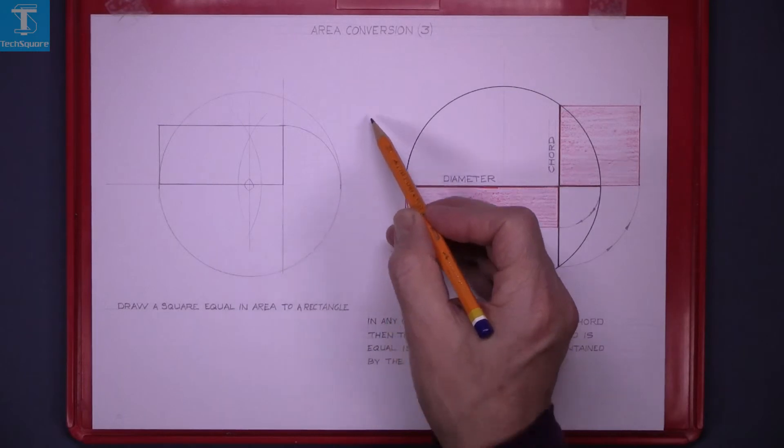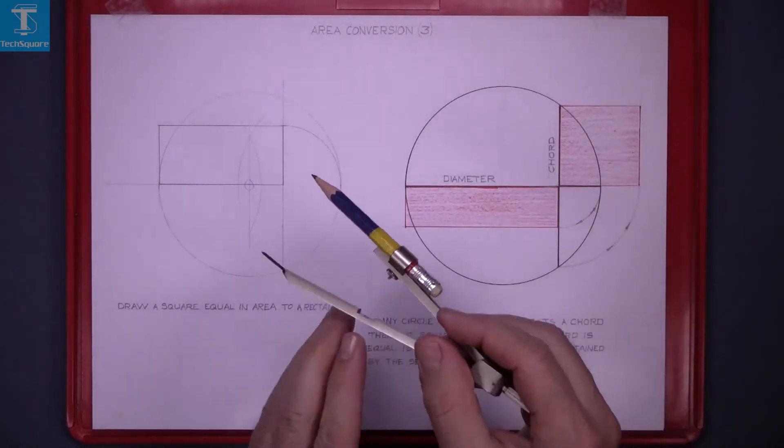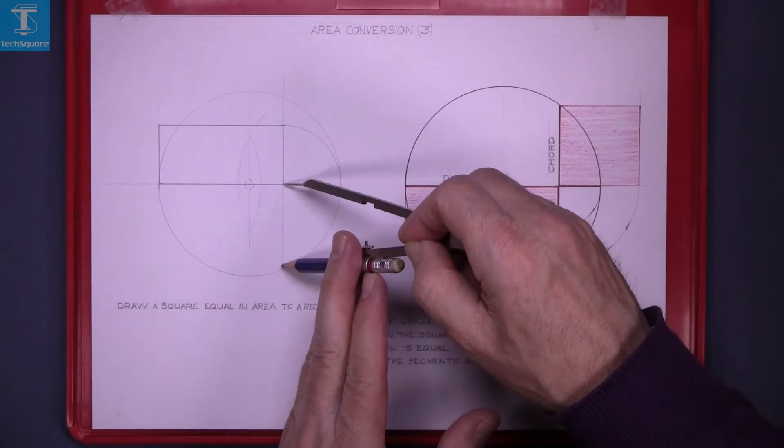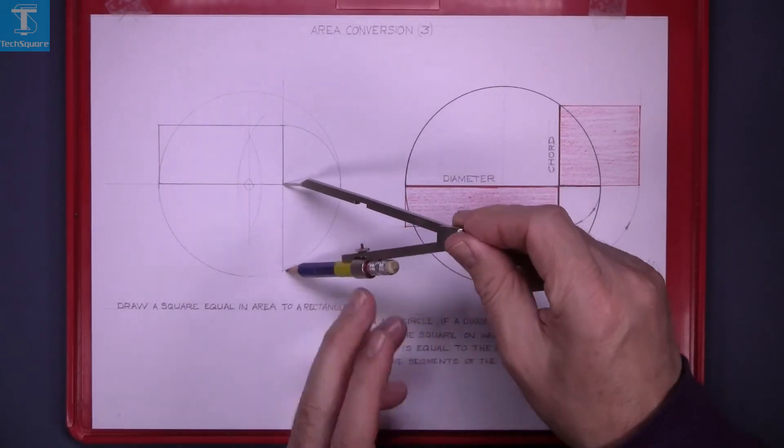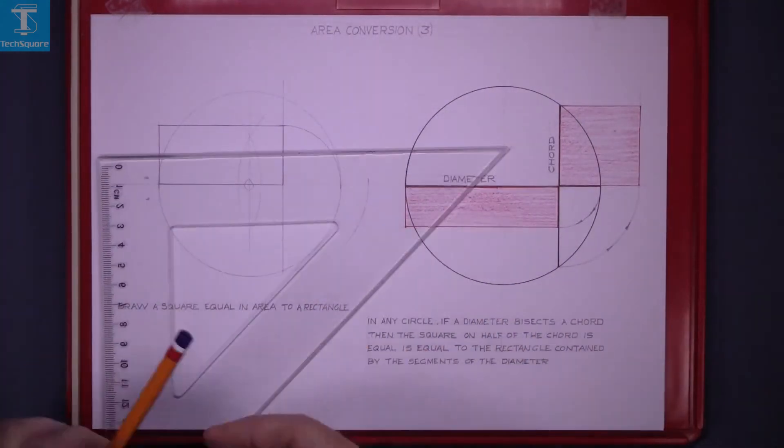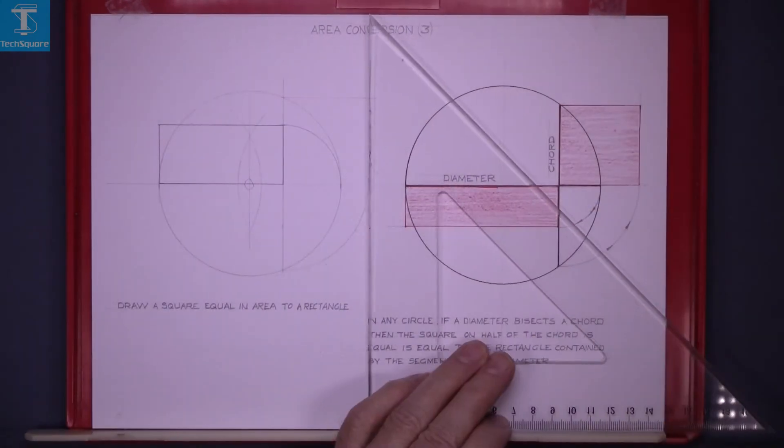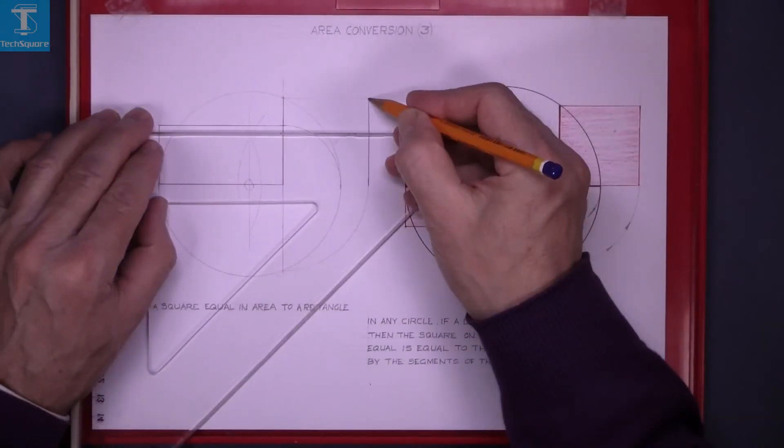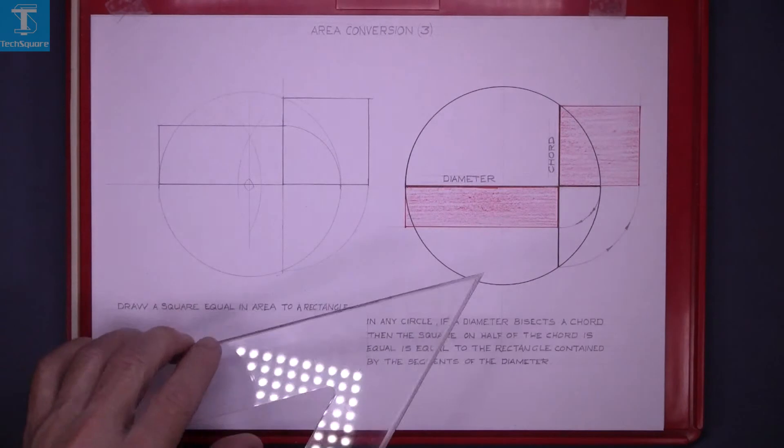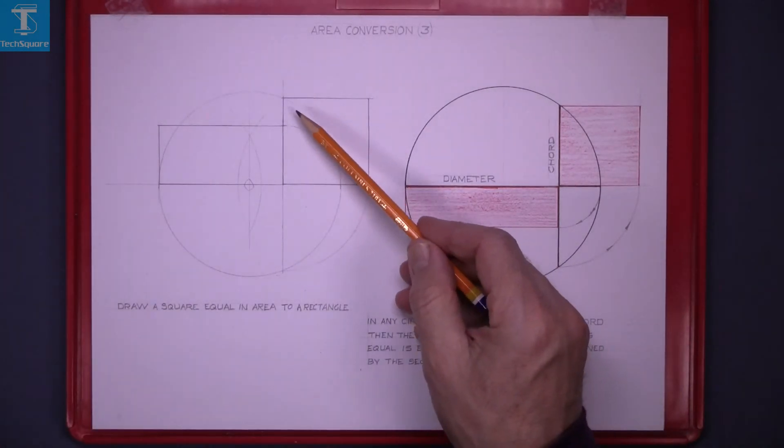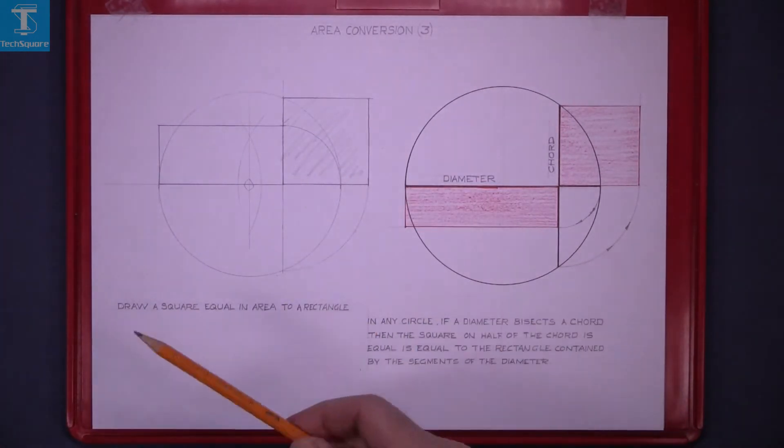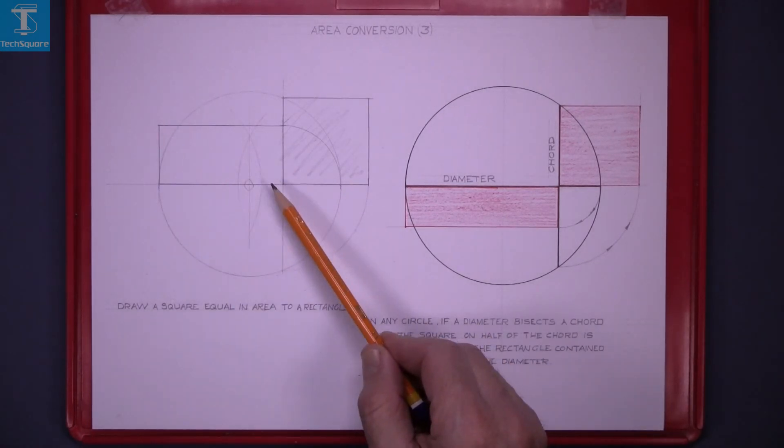Use this point here and create the square. Rotate the half of the chord up. Draw in the square. That square there is equal in area to the rectangle that we were given.